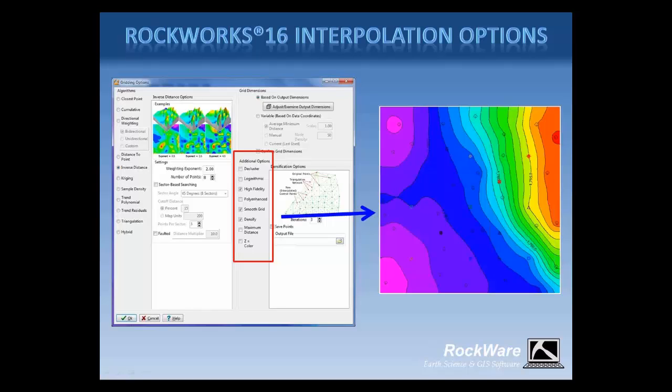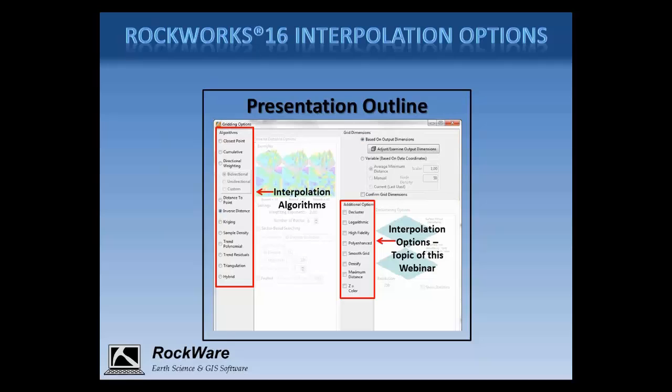If you think of questions during the presentation, please go ahead and enter them into the chat box, and we'll address them at the end. I want to clarify what I'll be discussing. I'll use this screenshot of the gridding options available in Rockworks 16. When creating a grid or block model, you can select from a list of interpolation algorithms displayed on the left side, and interpolation options on the right side. These interpolation options can be selected with any of the modeling algorithms. While the algorithms are mutually exclusive, the interpolation options are not. During the webinar, I'll be discussing these interpolation options only — I won't be covering the algorithms.